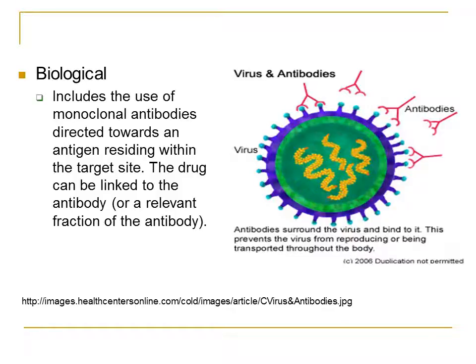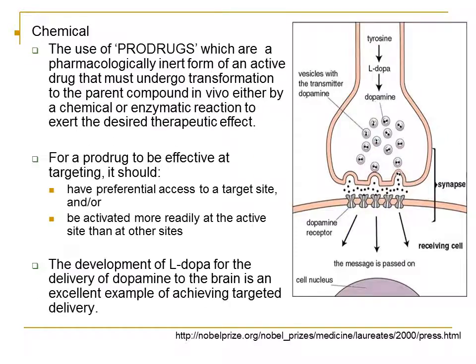An example of the biological approach is the use of monoclonal antibodies directed towards an antigen residing within the target site. The drug can be linked to the antibody or to a relevant fraction of that antibody. For the chemical approach using pro-drugs — which are pharmacologically inert and activated inside the body — to be effective at targeting, the pro-drug should have preferential access to the target site and should be activated more readily at the active site than at other sites.